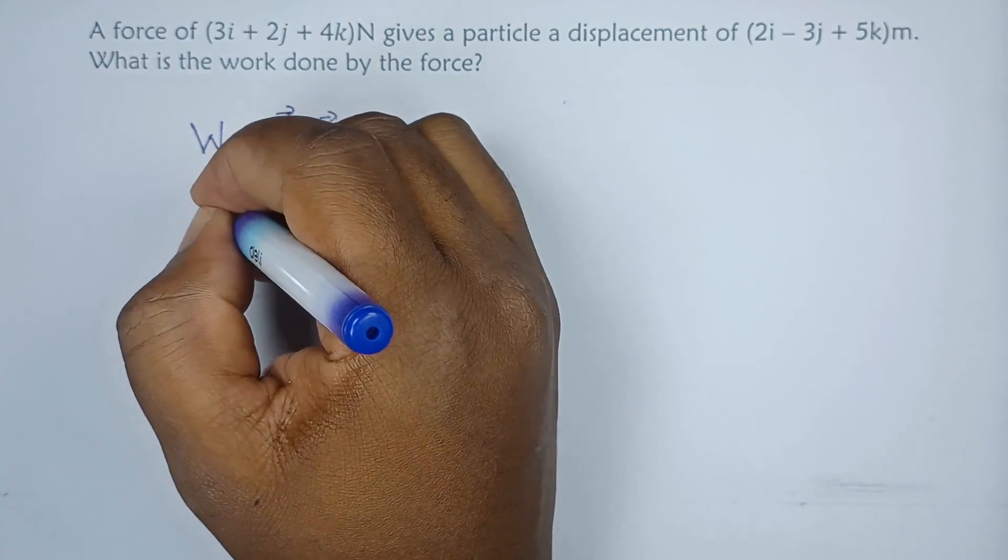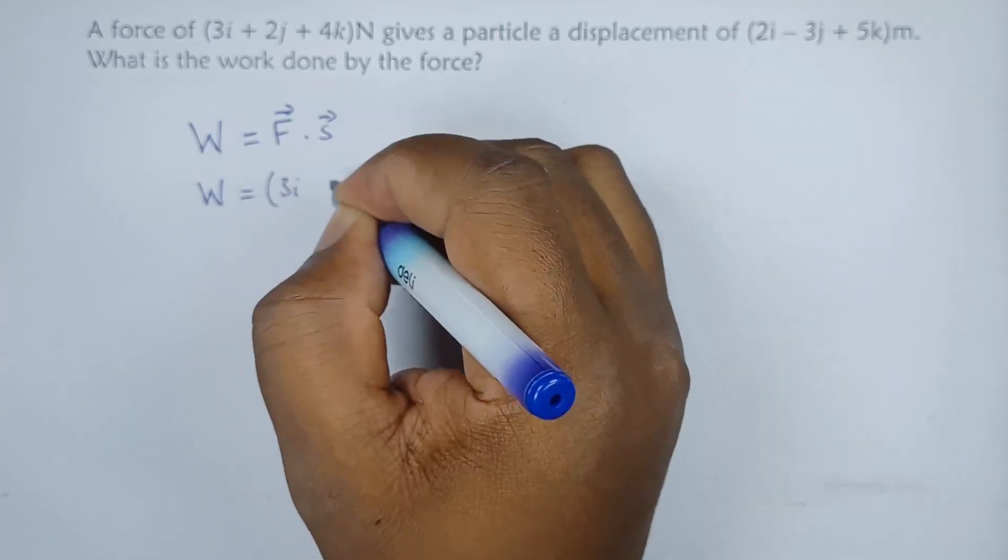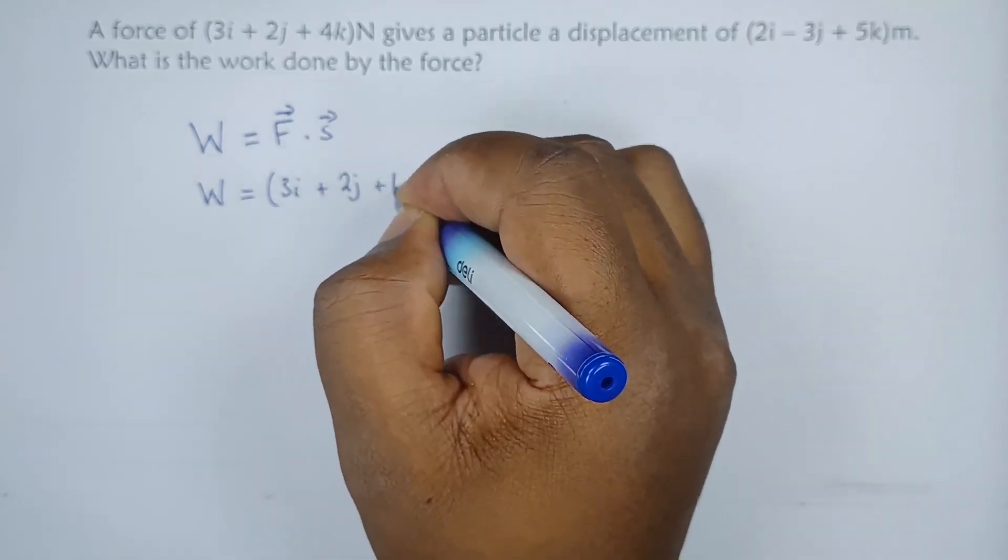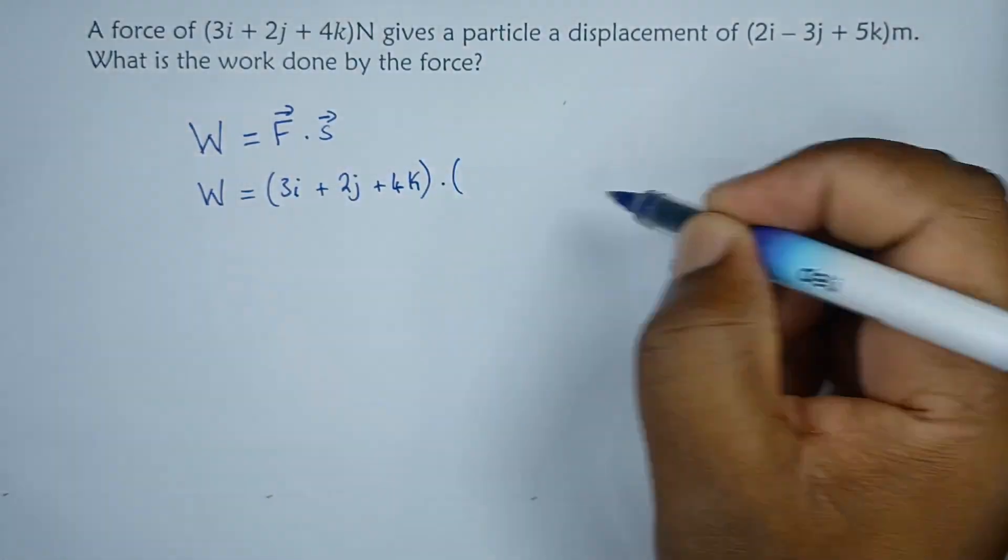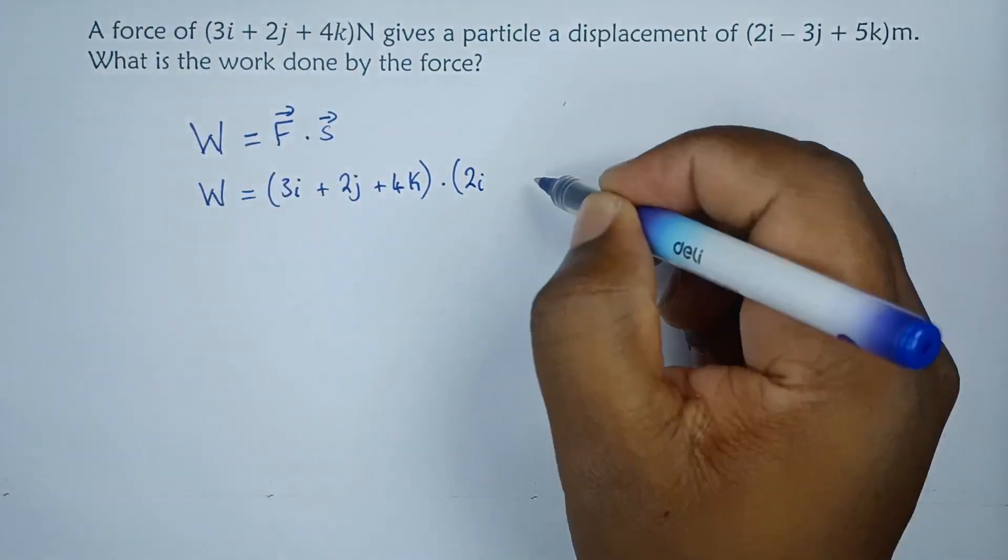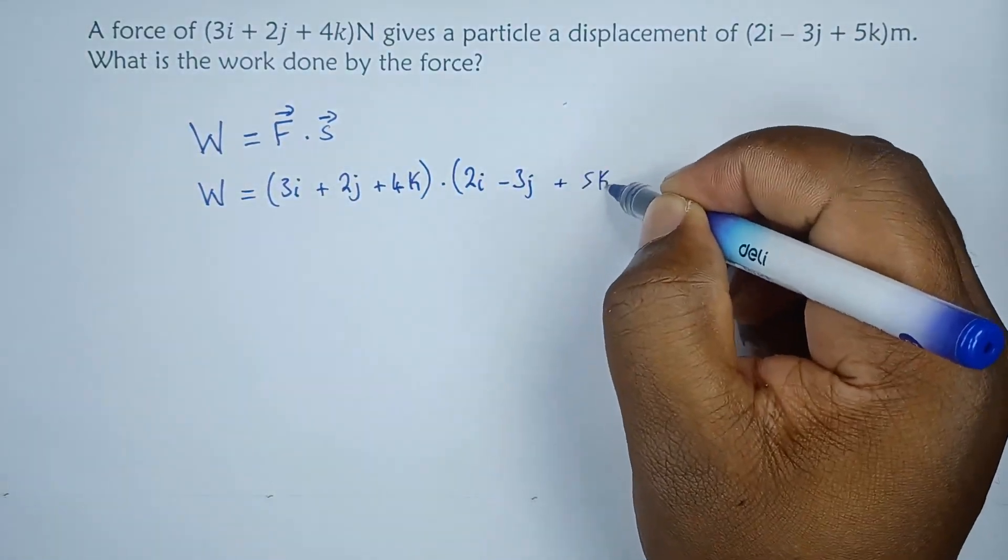So the force given is 3i plus 2j plus 4k, multiplying with the displacement which is 2i minus 3j plus 5k.